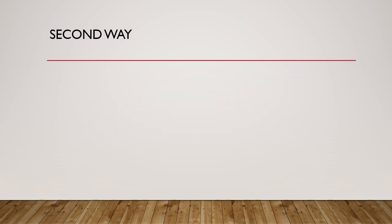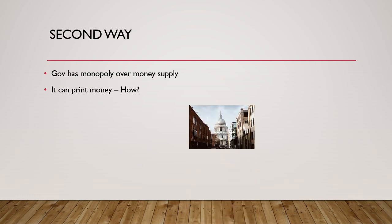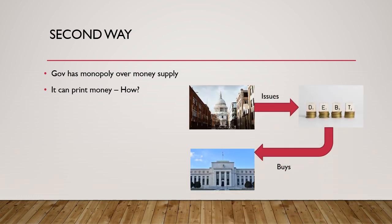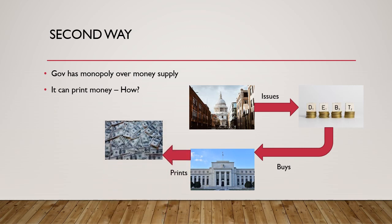The second way to fund fiscal deficit: since the government has a monopoly over money supply, it can print money. The government issues debt, which is then bought by the central bank — usually not directly from the government but through private players — by printing fresh money, which in turn is deposited with the federal government, funding its fiscal deficit. In the modern context, this is called QE, or quantitative easing.